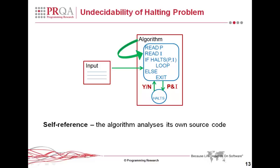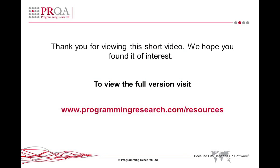The thing is, no matter how sophisticated the halt algorithm is, it will give the wrong answer in this case. And this, in static analysis, is a typical situation where you've got a tool that analyzes its own source code — it cannot predict what it's going to do.